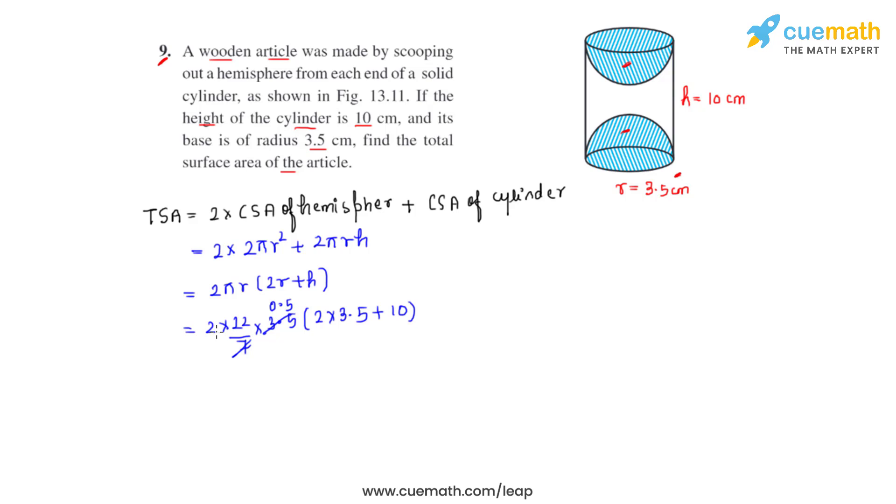0.5 times 2 is 1, so we're left with 22 times (2 times 3.5 is 7, 7 plus 10 is 17). So 22 times 17, and that gives us the answer as 374 centimeter square as the total surface area of the article which is made by scooping out a hemisphere from each end of a solid cylinder.